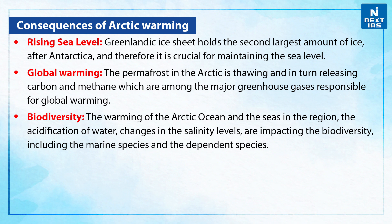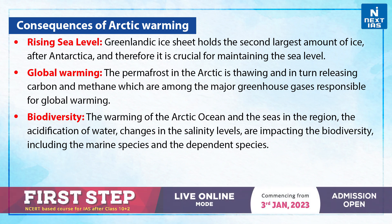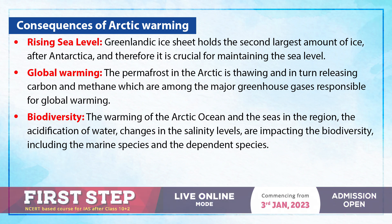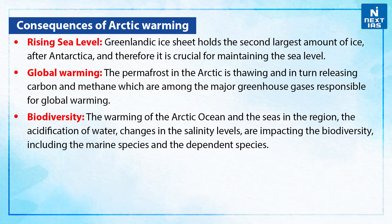Now, the consequences of Arctic warming. First, rising sea levels: the Greenlandic ice sheet holds the second largest amount of ice after Antarctica and is therefore crucial for maintaining sea level. Second, global warming: the permafrost in the Arctic is thawing and in turn releasing carbon and methane, which are among the major greenhouse gases responsible for global warming.